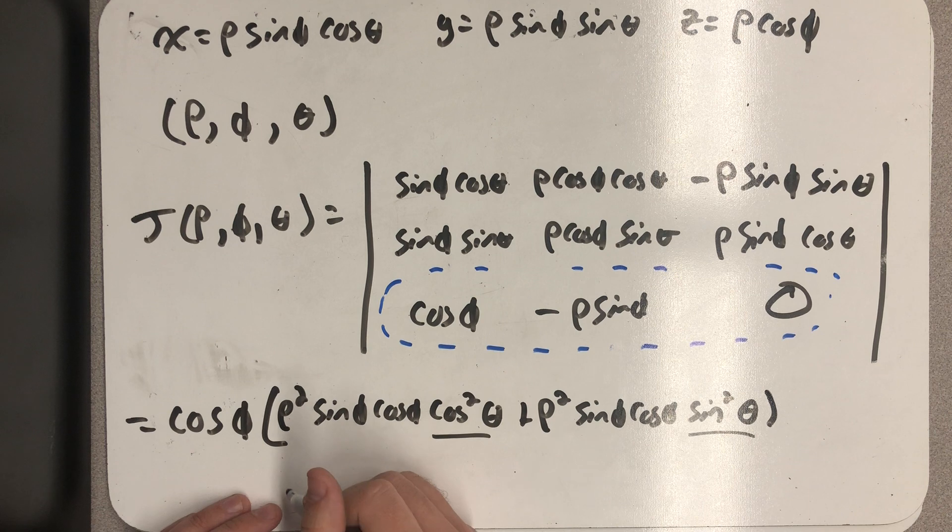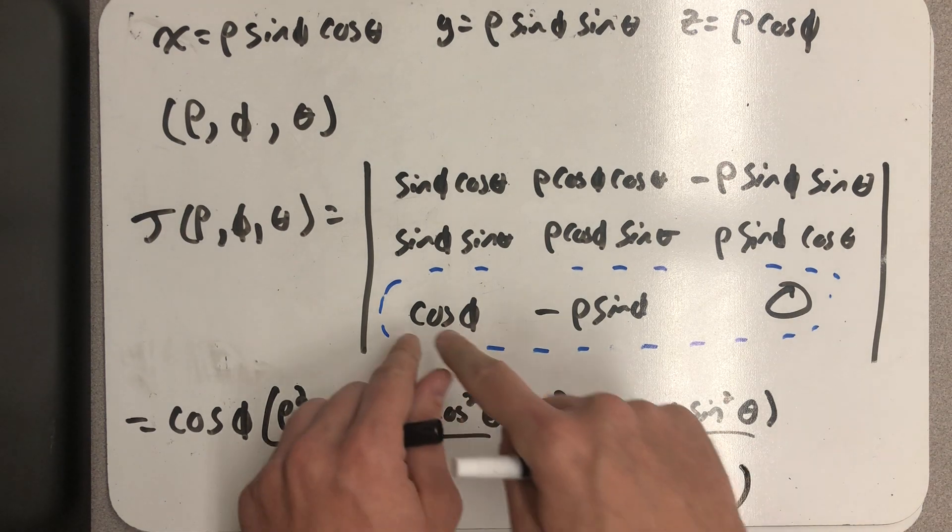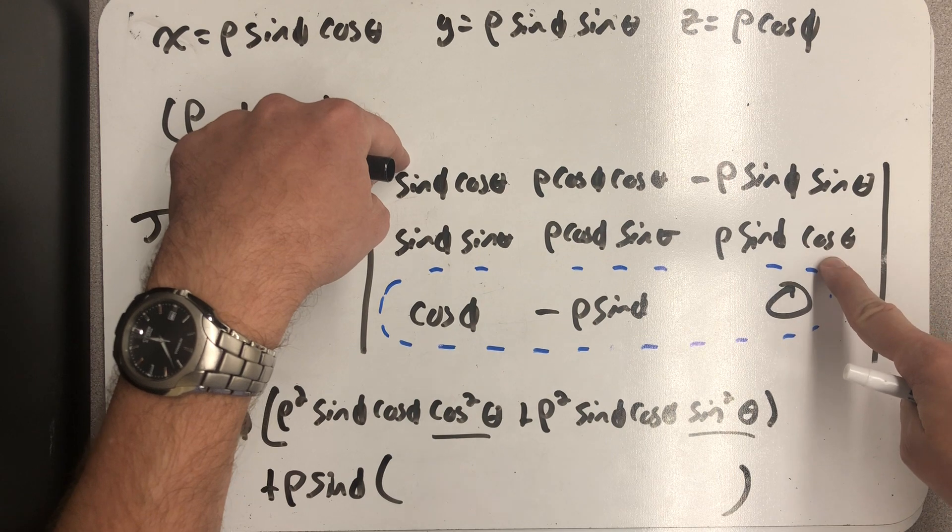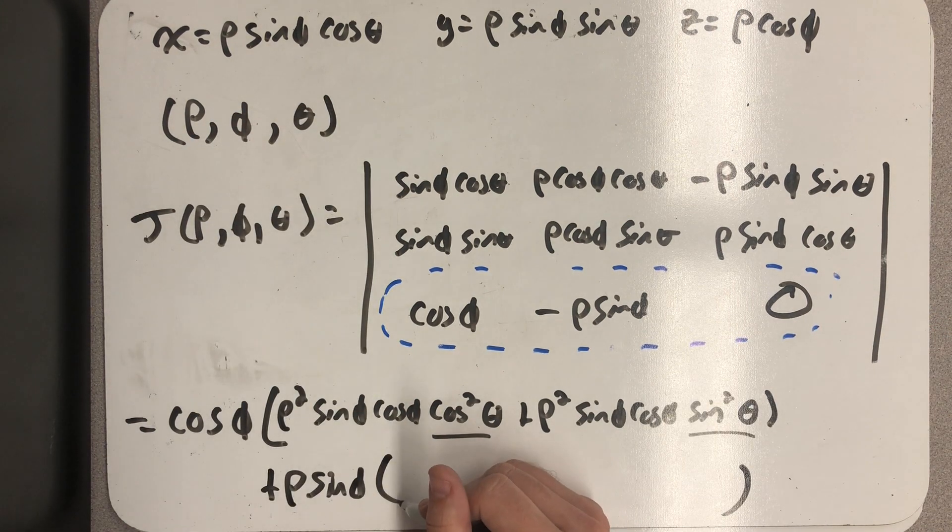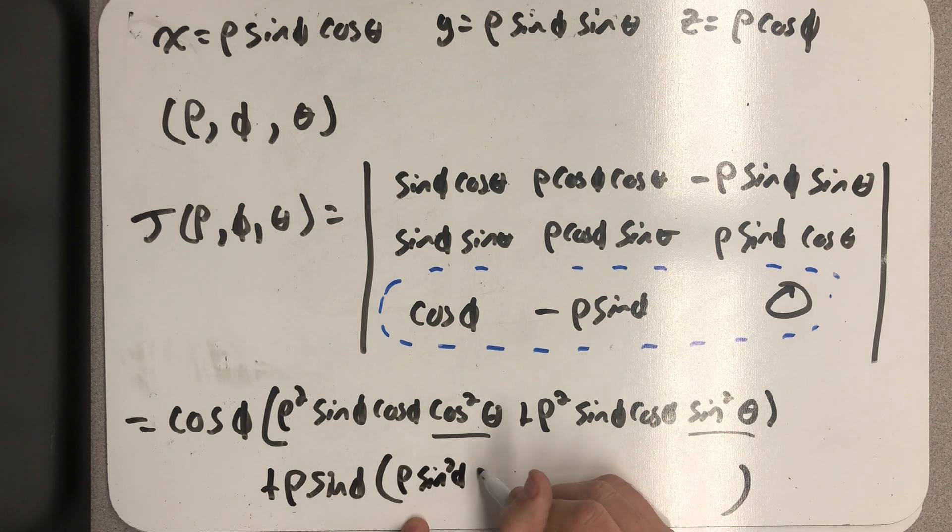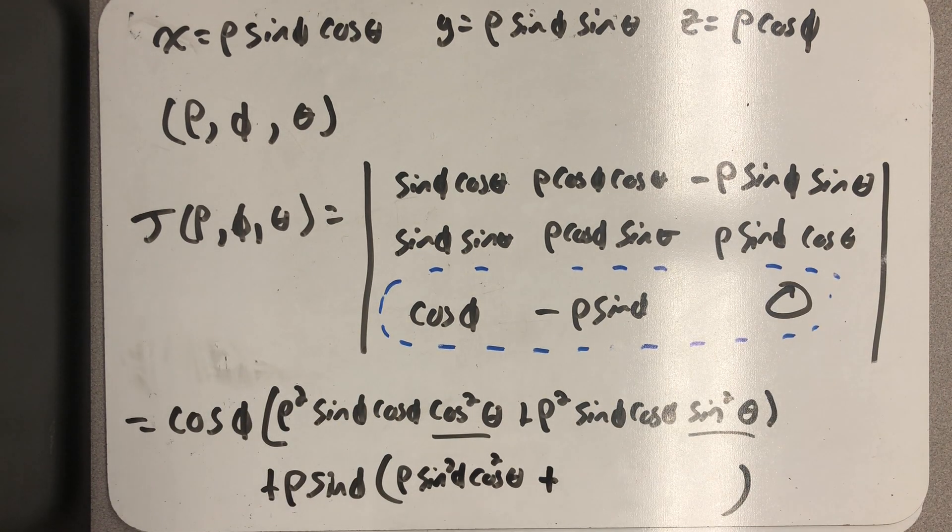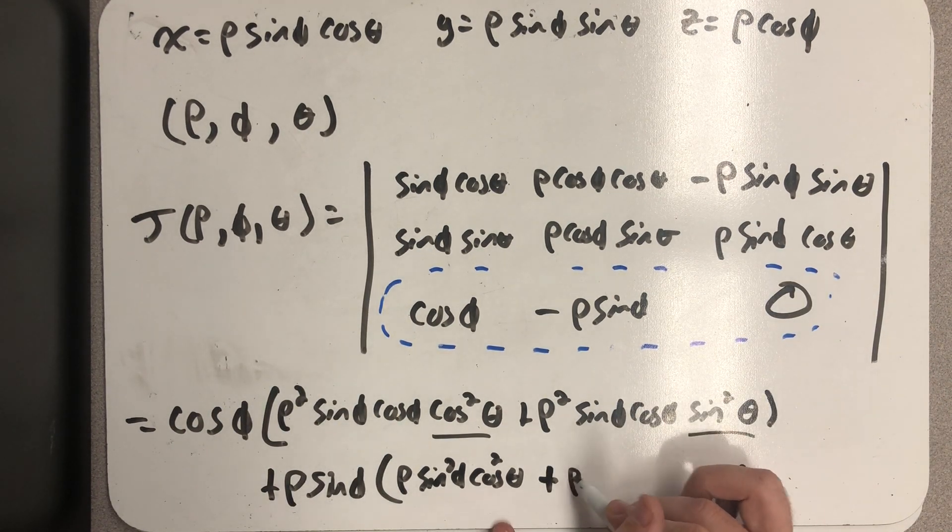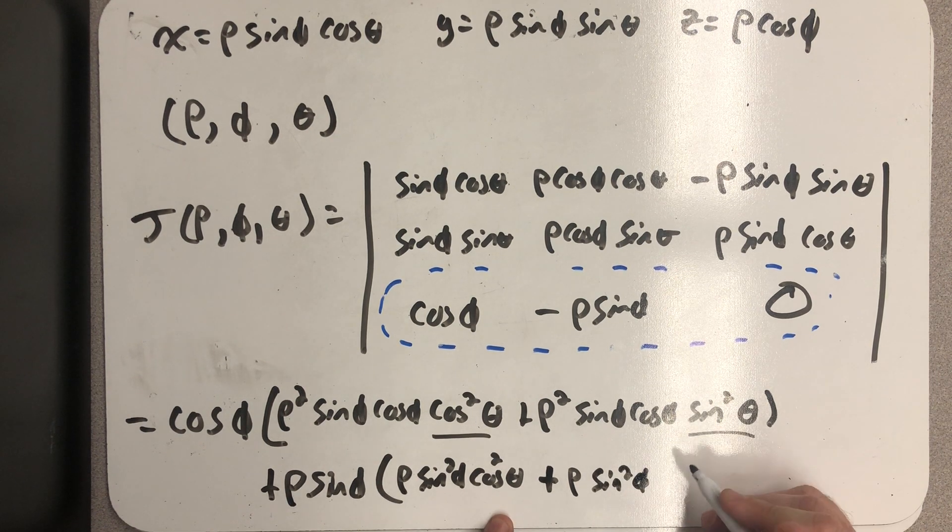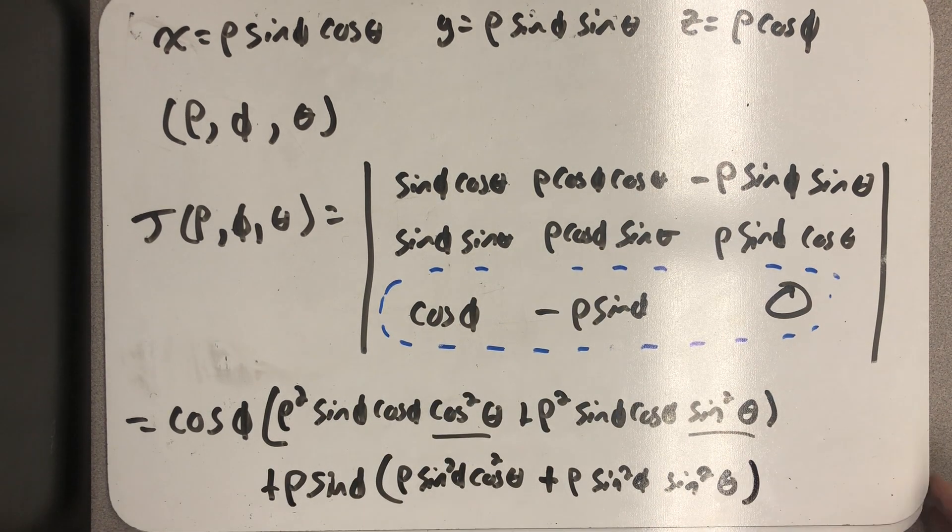And now I need to think about this next spot. So it would be minus that minus rho. So plus rho sine phi times the determinant of the matrix I get when I take out the bottom row in the middle column. So I multiply these two things together and I get a rho sine squared phi cosine squared theta minus, but it's really going to be a plus, rho sine squared phi and then sine squared theta.